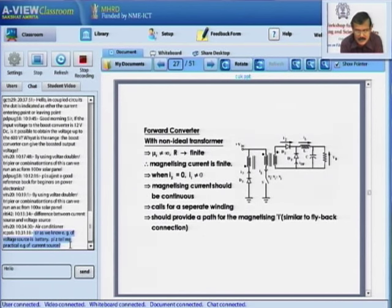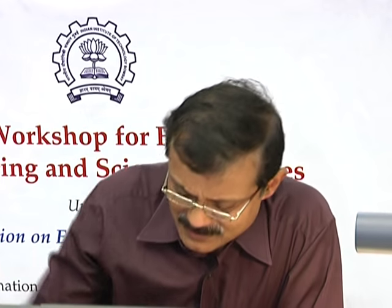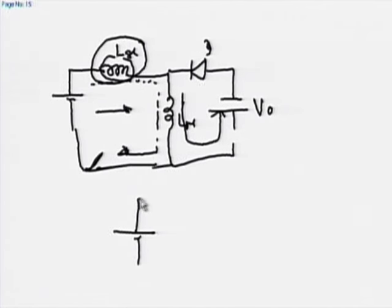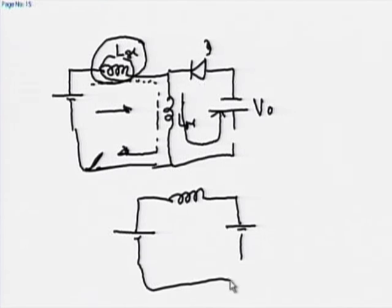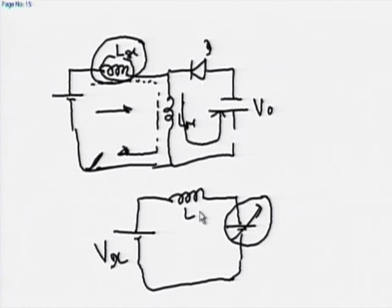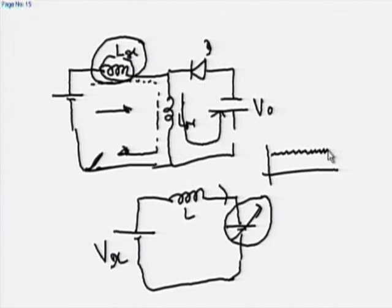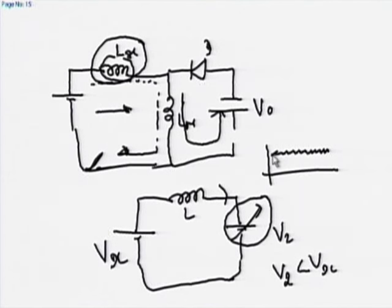There is a question: we know a voltage source is a battery — please tell me practically what a current source is. A current source can be constructed as follows: I have a fixed voltage V_DC, an inductor L, and a controlled voltage V2. By regulating V2, I can make the current flowing through the inductor approximately constant. If V2 is less than V_DC, the inductor current increases slowly. If V2 is greater than V_DC, the inductor current decreases.